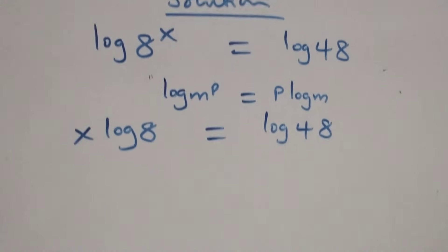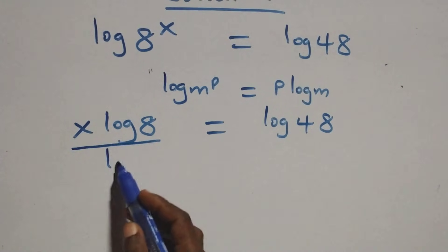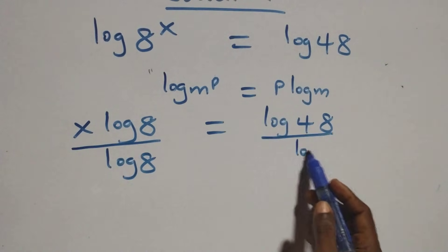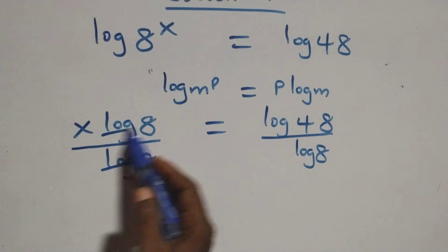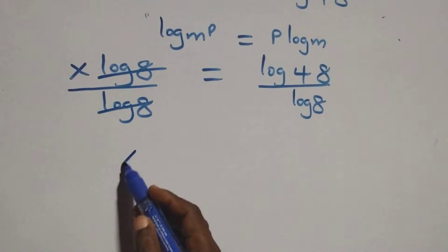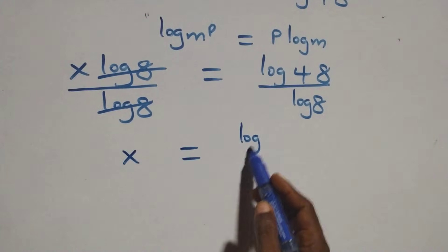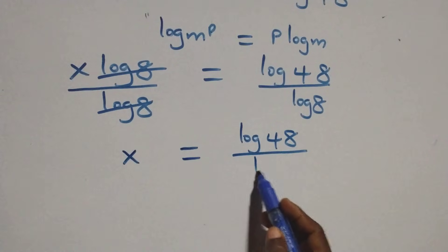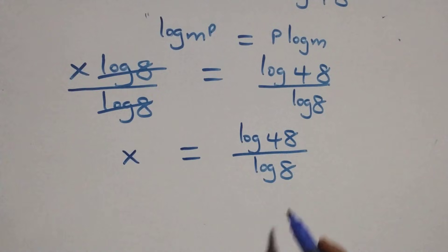The next step: divide both sides by log 8. We divide this side by log 8, and also divide this side by log 8. This gives us log 8 cancelling each other, and this becomes x equals to log 48 over log 8.